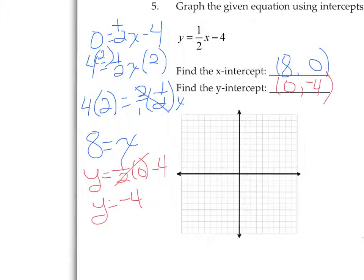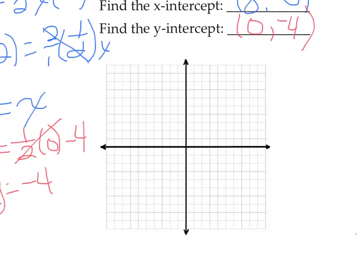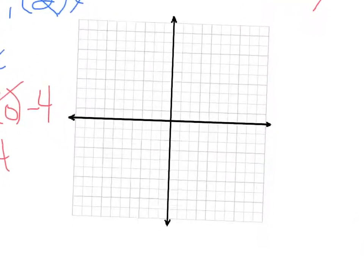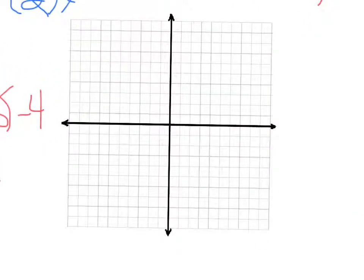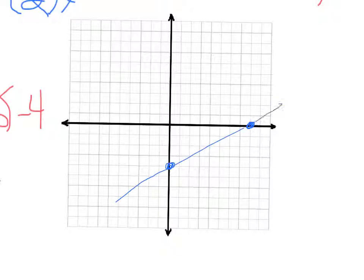We put both intercepts on the graph. The y-intercept is (0, -4), which goes right here. And we connect the dots.